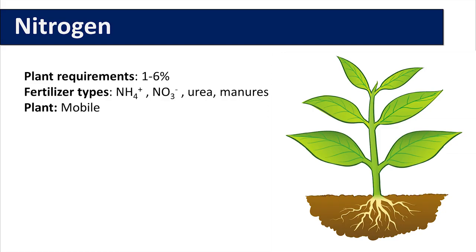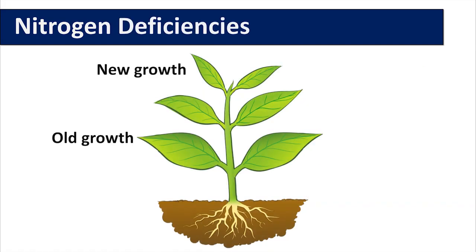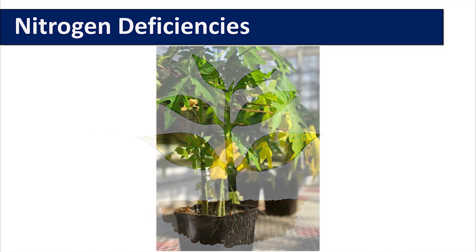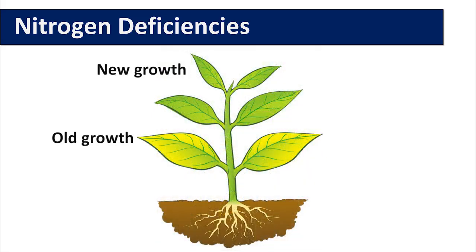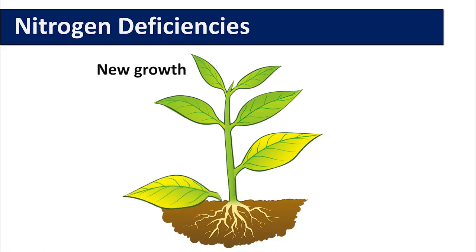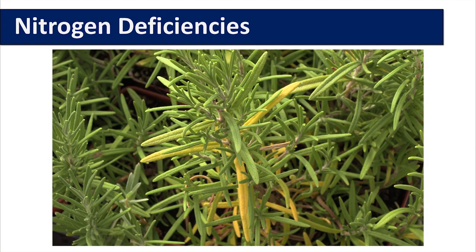Nitrogen deficiencies cause the oldest leaves to turn yellow — this will be uniform yellowing. As these leaves are used up for nitrogen reserves, the next set of oldest leaves will start to turn yellow as that nitrogen is remobilized and directed towards the newest growth of the plant. These leaves will fall off and the next set of leaves will progressively turn yellow until the deficiency symptoms are corrected.